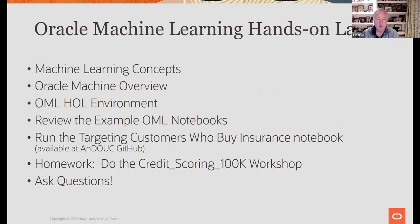The outline is: a few quick concepts, an overview of the product, going through the example environment to make sure you're all set. We'll pause for questions along the way. We're going to run through the example notebooks that ship with the product, and then go to a slightly more interesting one — a little more visual — the targeting customers who buy insurance notebook, which is available on the Oracle Analytics and Data GitHub.